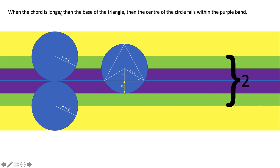So when the chord is longer than the base of the triangle, then the center of the circle falls within the purple band. So if the center of the circle is within that purple band, then the chord ends up being longer than the base of the triangle.